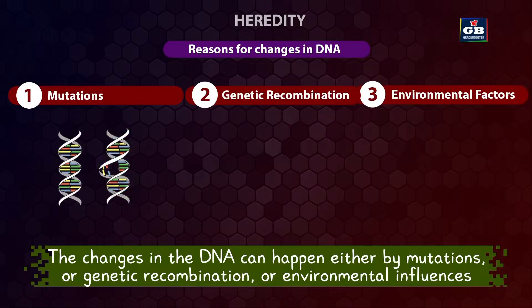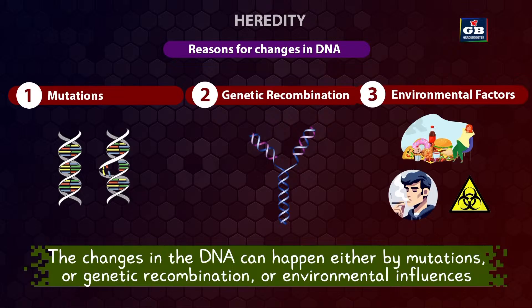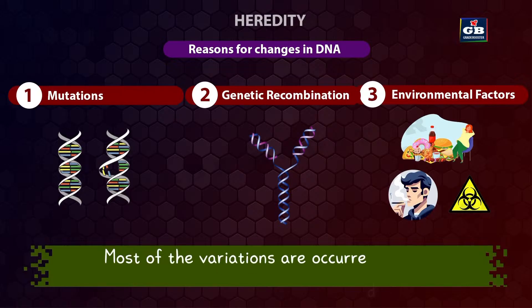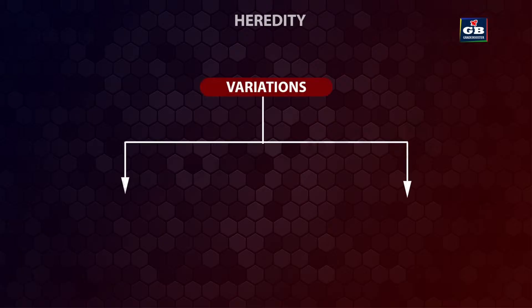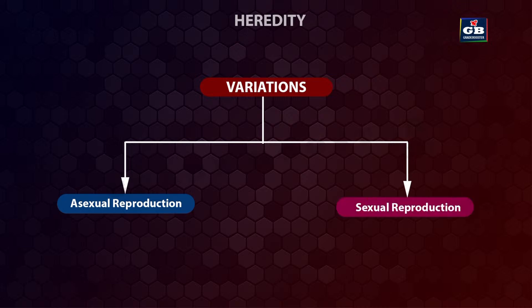Mutation means a sudden change in the DNA. Genetic recombination means a combination of genes from two different organisms. Environmental influences means the influence of non-living factors. Among these three, most of the variations occur during genetic recombination. Variations can be observed in both asexual reproduction as well as in sexual reproduction.